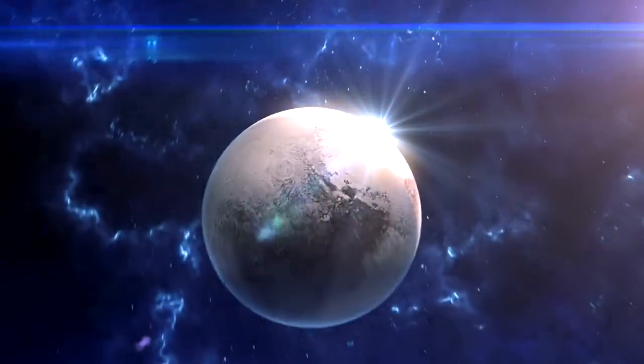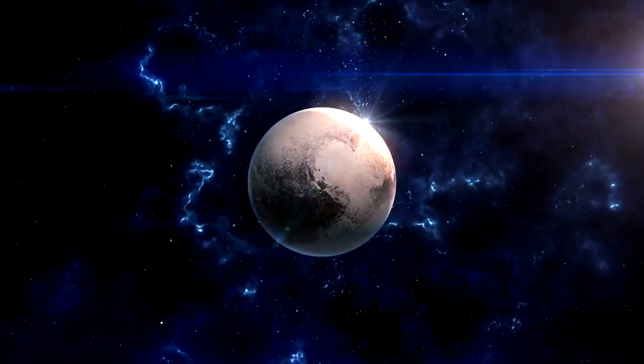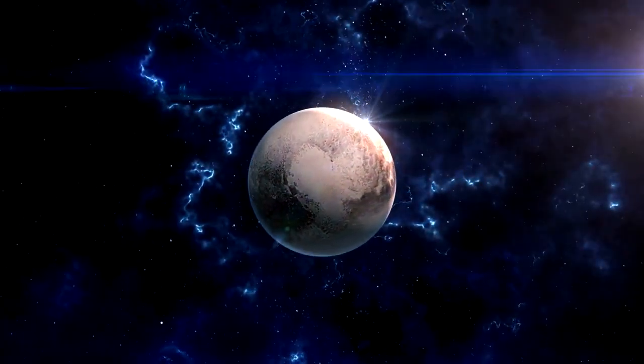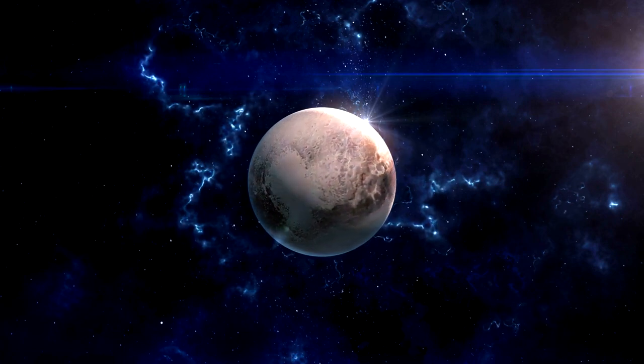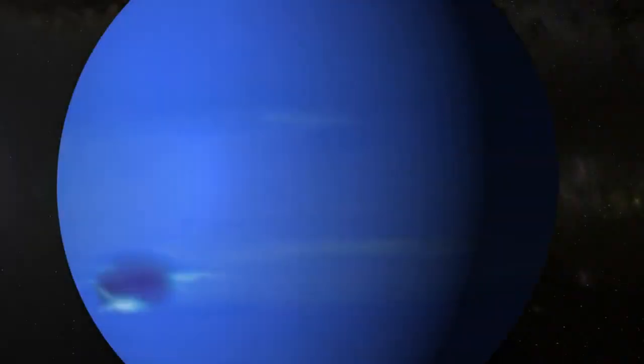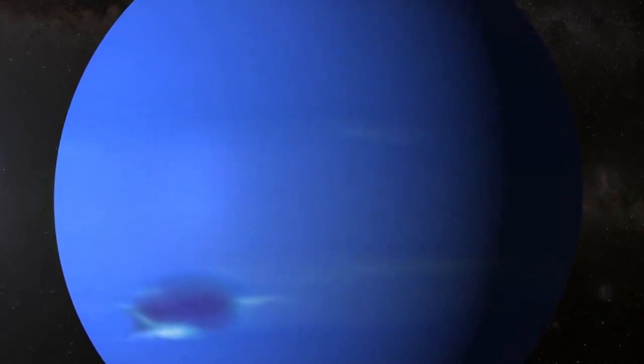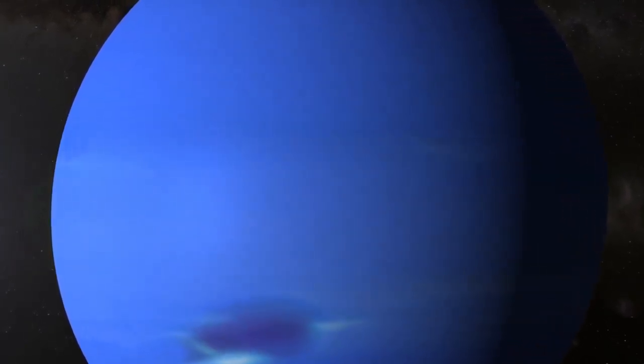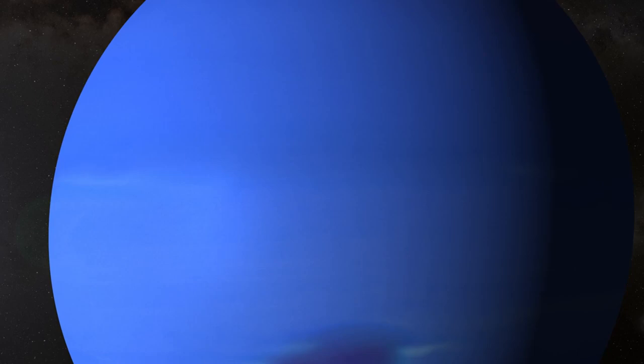If a collision were to occur, it would release an enormous amount of energy, likely fracturing Pluto and scattering debris throughout the solar system. This debris could pose a threat to other planets and their moons, potentially leading to new craters and altering surface conditions. Additionally, the collision could significantly alter Neptune's orbit and atmosphere, leading to further instability in the solar system.